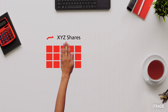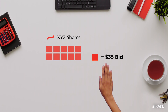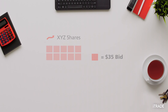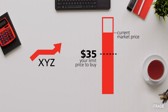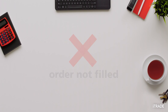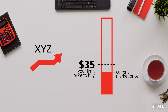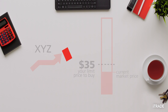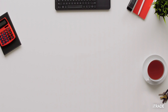You place a buy order at a limit price lower than the current offer for 50 shares at $35 each. If the market price of XYZ trades above your limit price, then your order will not be filled. If XYZ drops to or below your limit price, the order will be filled. Now you know the difference between market and limit orders and when you might use them.